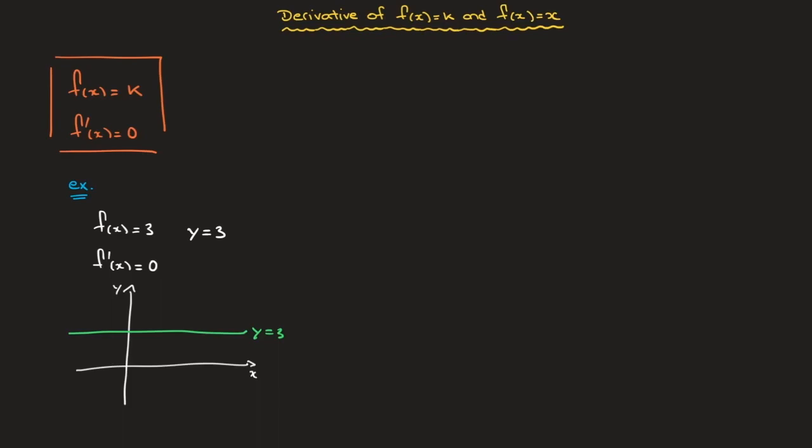And to convince ourselves of that, we can remember that the gradient or slope is the rise over the run. And for a horizontal line, the rise is always zero. So the gradient is zero. And consequently, the derivative is always zero. So that's how to differentiate constants.